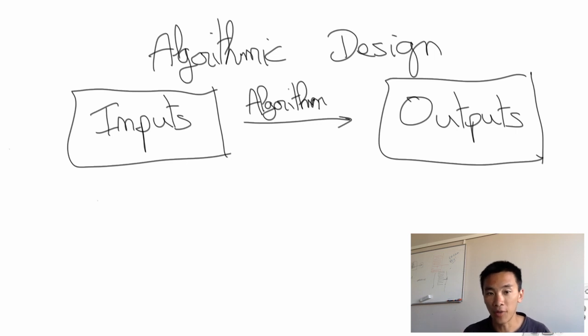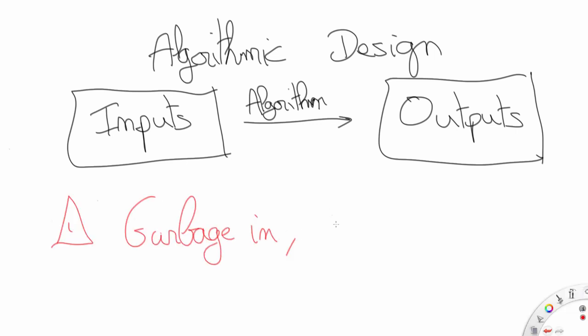However, there is another phrase that's very important in algorithmic design and that's getting more and more attention as algorithms are conquering the world: garbage in, garbage out. Indeed, in practice quite often the inputs that we are given are not necessarily the inputs that we expected to have. And if these inputs differ from what they are supposed to be, the outputs may be very bad.